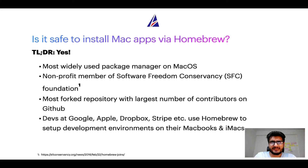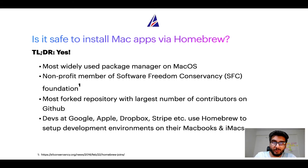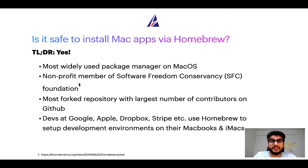Many other open source projects like Git, Busybox, Samba, and Vim are all part of the Software Freedom Conservancy organization. Also, Homebrew is the most forked project on GitHub and has the largest number of contributors on its GitHub repository. Many developers at organizations like Google, Apple, Dropbox, and Stripe use Homebrew to set up different development environments on their MacBooks and iMacs.